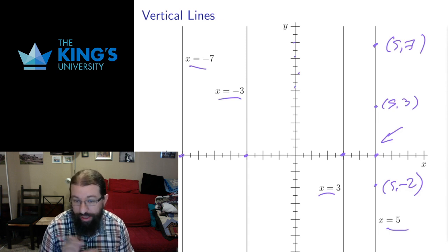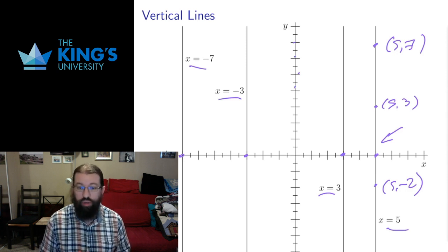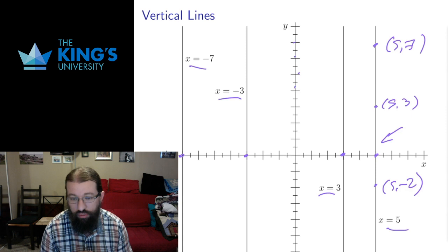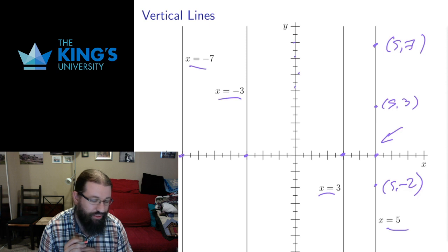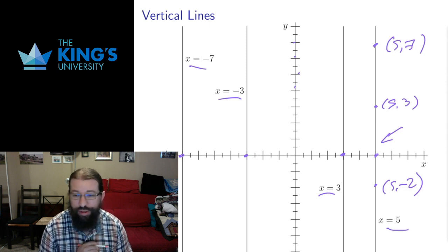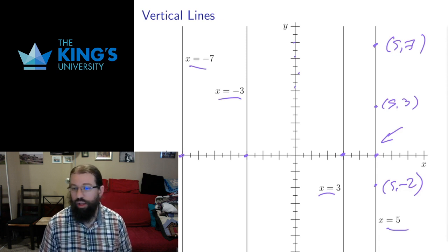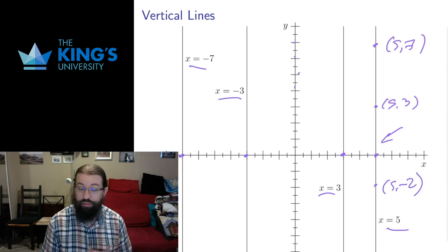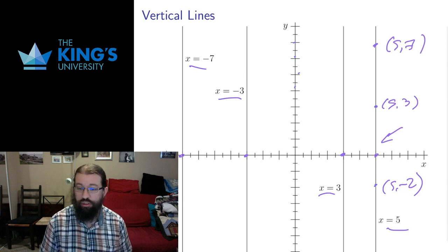One last thing about vertical lines: a vertical line does not have a slope. There is no run, so rise divided by run would be division by zero, which doesn't make sense. So a vertical line has no slope and no y-intercept, and cannot be put into slope-intercept form. Every other line can be expressed in slope-intercept form except vertical lines. To recap: slope-intercept form y = mx + b describes most lines, where m is the slope and b is the y-intercept. Horizontal lines are y equals a constant, and vertical lines are x equals a constant.